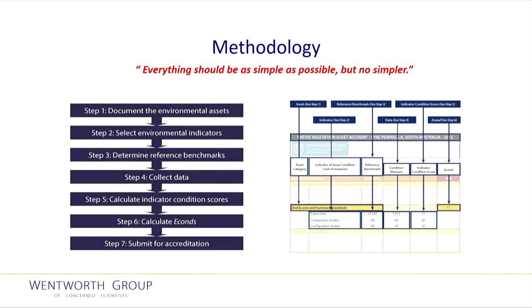In order to describe the complexity of an environmental asset, several indicators often need to be integrated to describe the condition of that asset for a particular location. We developed a seven-step method for constructing these accounts. The figure to the right shows how each of these steps contribute to the assembly of an account — in this case for a native vegetation asset in the Eyre Peninsula region of South Australia.